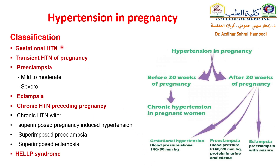Classification: hypertension in pregnancy is classified into gestational hypertension, transient hypertension of pregnancy, preeclampsia (mild to moderate and severe), eclampsia, chronic hypertension preceding pregnancy, chronic hypertension superimposed by preeclampsia or eclampsia, and HELLP syndrome. This diagram shows hypertension in pregnancy has two main types: when hypertension appears after 20 weeks, it may be gestational hypertension (high BP without proteinuria), preeclampsia (high BP with proteinuria and oedema), or eclampsia (preeclampsia with seizure). If hypertension appears before 20 weeks, it is called chronic hypertension of pregnancy.